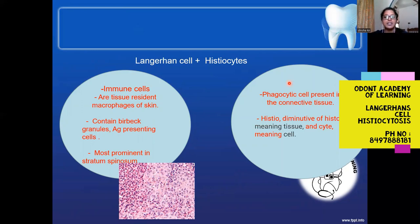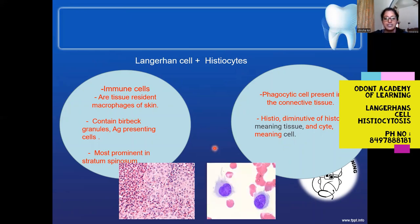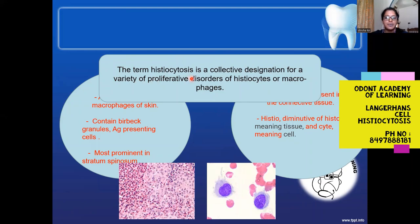Histiocytes are macrophages or phagocytic cells seen in connective tissue. The term 'histiocyte' is derived from 'histo' meaning tissue and 'cyte' meaning cell — so any immune cell residing in tissue is a histiocyte. Histiocytosis refers to an increased proliferation of these histiocytes or macrophages. The condition is named based on the cell types seen in histology: Langerhans cells and histiocytes.